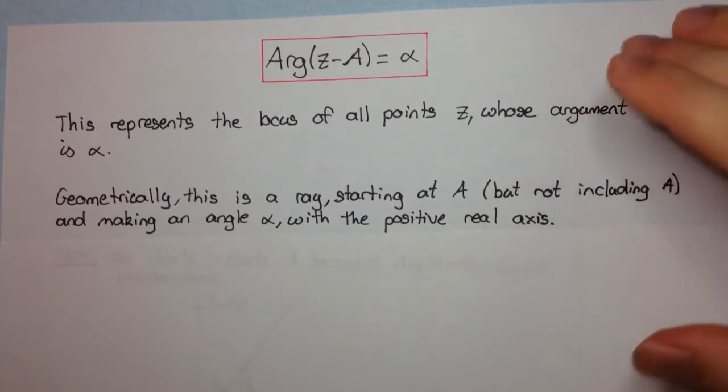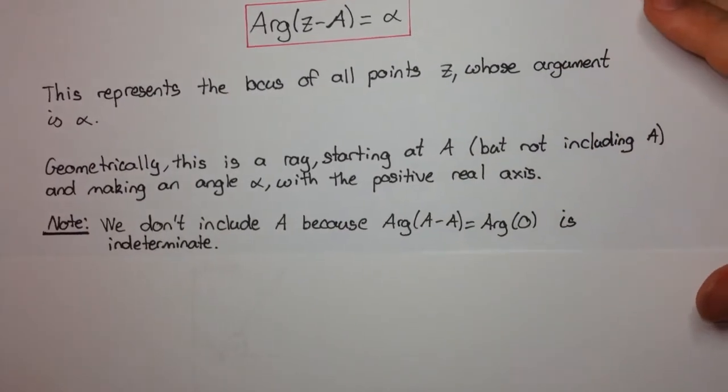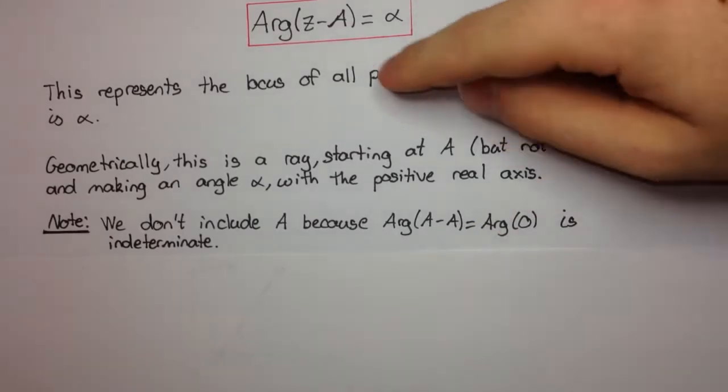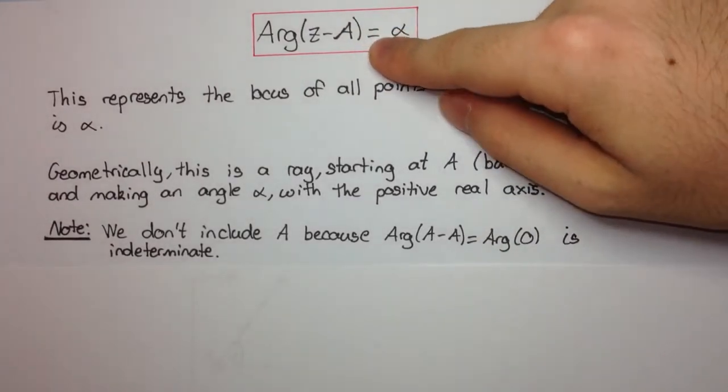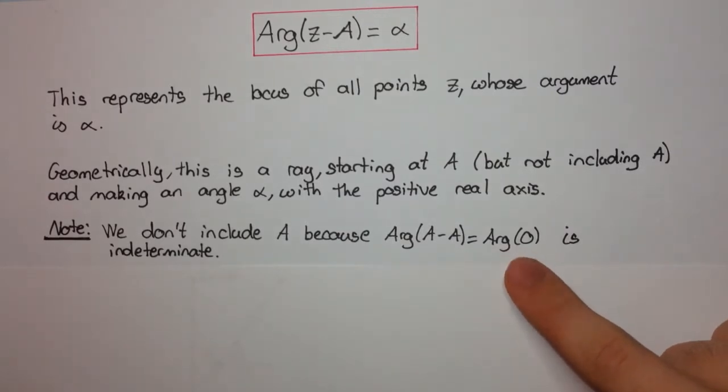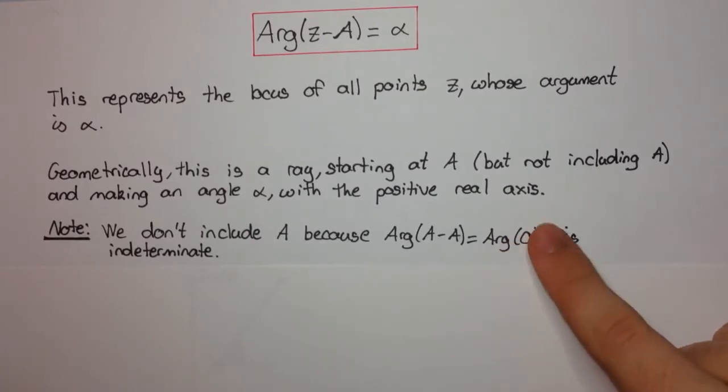So first of all, why don't we include a? Well, we don't include a because the argument of a minus a, so if z can take the value a, then that means we should be able to sub it into this. Now if z can take the value a, we'll have arg of a minus a, which is arg zero, and arg zero is indeterminate. And I might talk about that in a separate video actually, because I think it's quite important to talk about arg zero.